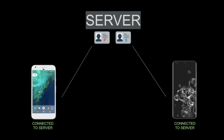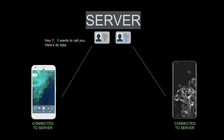Once the devices are connected, they are ready to send call requests and also ready to listen to any incoming calls. Now the Samsung wants to video call the Pixel. So it tells the server: 'Hey server, I want to call P, and here is my network data and media configurations.' The server then checks if anybody with ID P is connected — and it does have P connected. So it tells P: 'Hey P, S wants to call you. Here is its data.' This data is the network and media data of S.